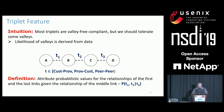The intuition is that most triplets are valley-free compliant, but we should tolerate some degree of valley-free violations and the likelihood of violations should be derived from data. What this triplet feature does is that it attributes probabilistic relationship values for the relationships of the first and last links given the relationship of the middle one. For instance, we would expect the probability of three back-to-back peer-to-peer links to be very small, but not necessarily zero.